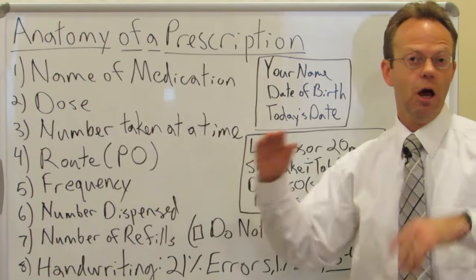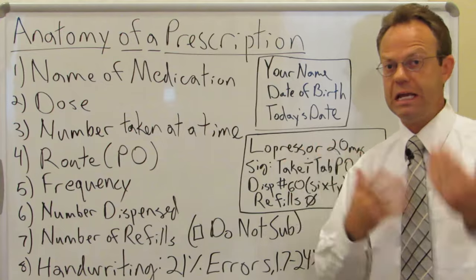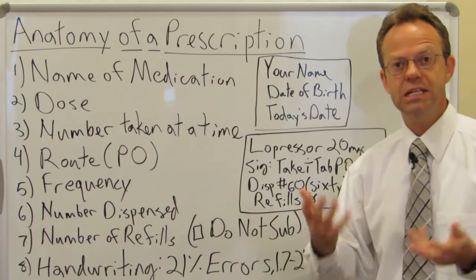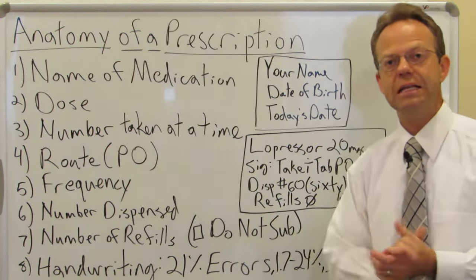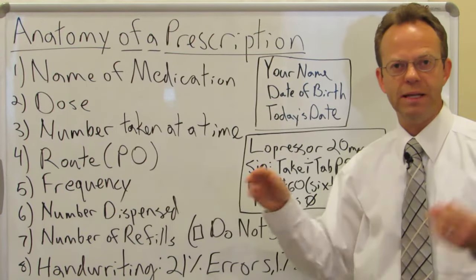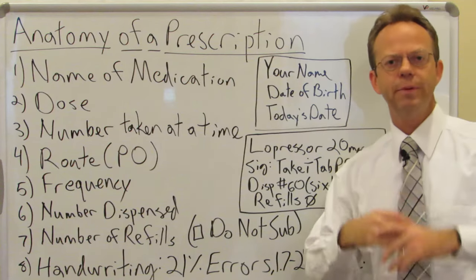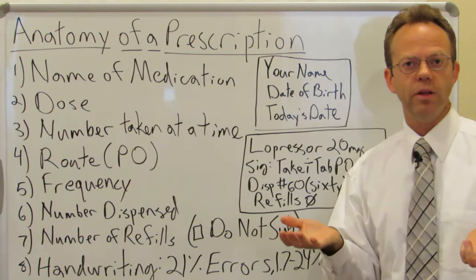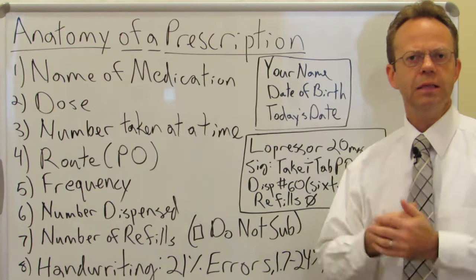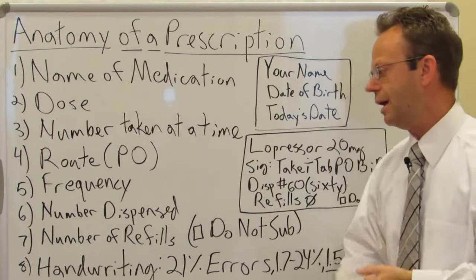Next is the frequency. Do you take one tab or two tabs? Do you take it in the morning, at night, or just once a day? How many times do you take it? That needs to be listed as well. Next is the number to dispense — how many pills are they going to give you in the bottle? Typically they'll give you a one month supply, so if you're taking a pill twice a day, they need to dispense you 60 pills.